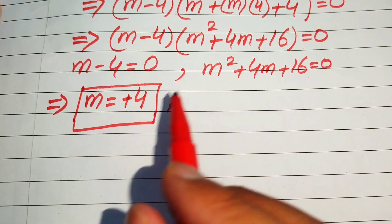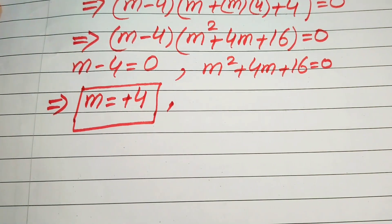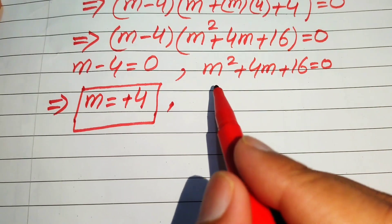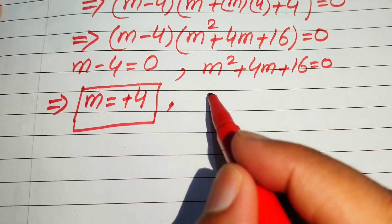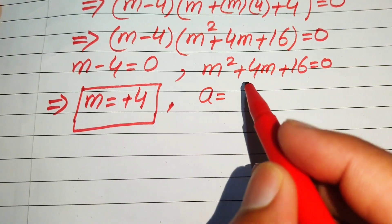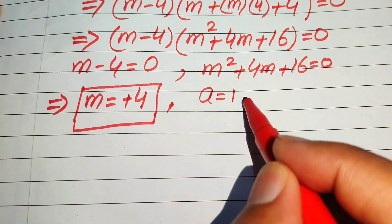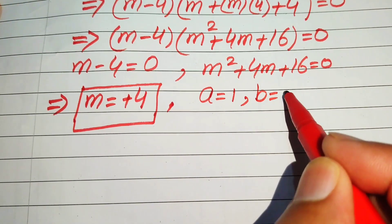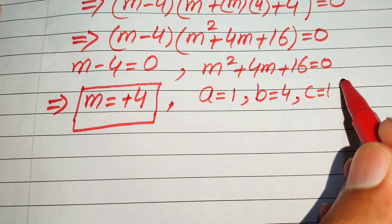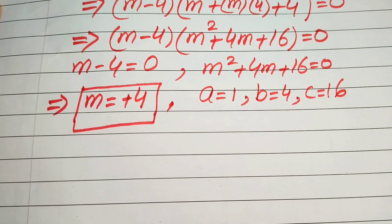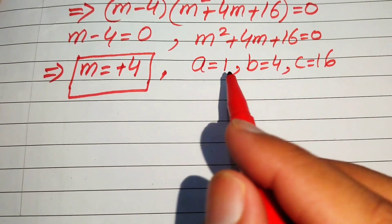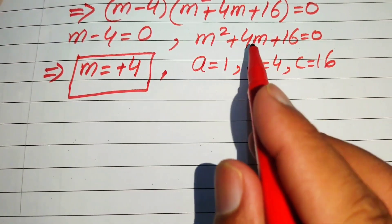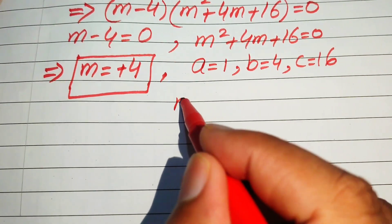To find the other roots we solve the quadratic equation m squared plus 4m plus 16 equals 0. We write the coefficients: a equals 1, b equals 4, and c equals 16. Now we apply the quadratic formula to solve this equation.